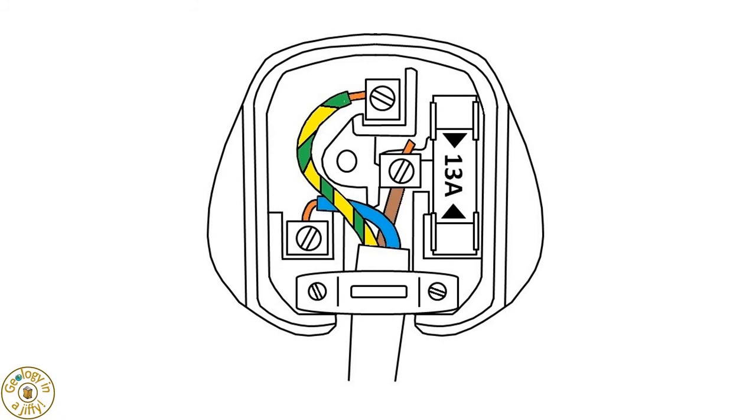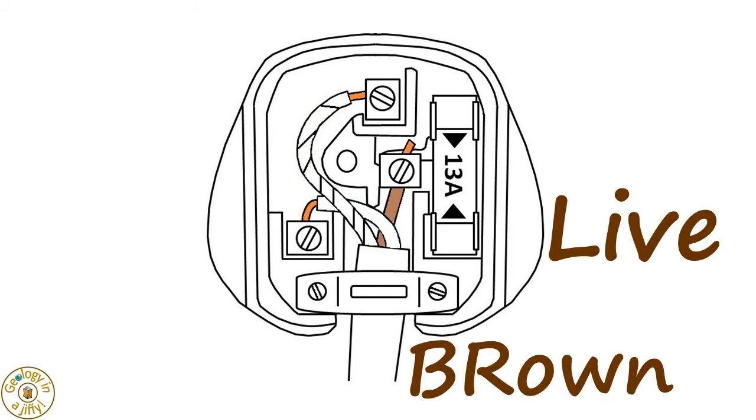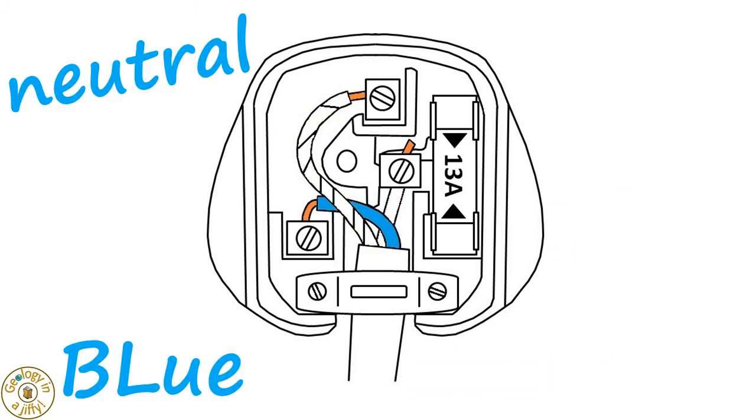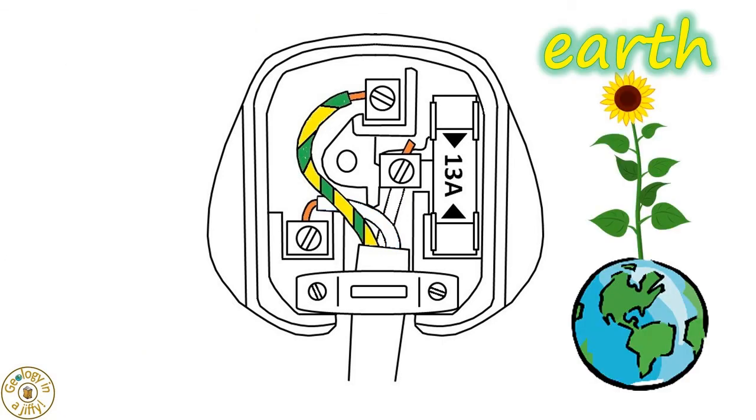The three wires are four colours. Live is the brown wire, neutral is the blue wire, earth is the yellow and green wire.